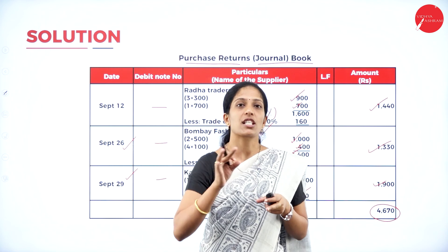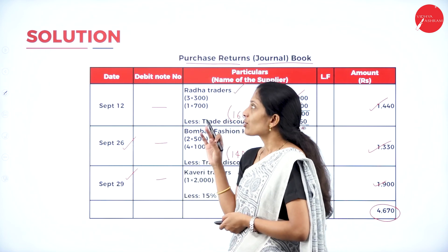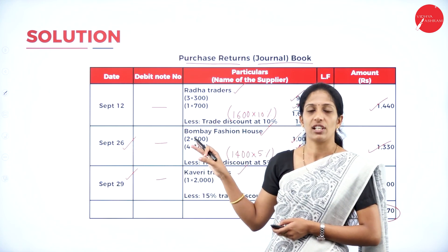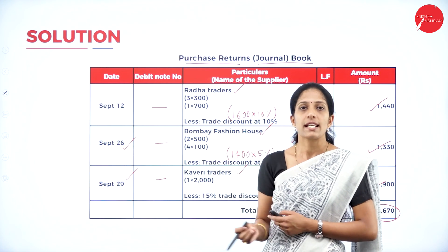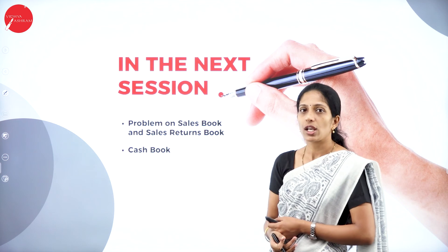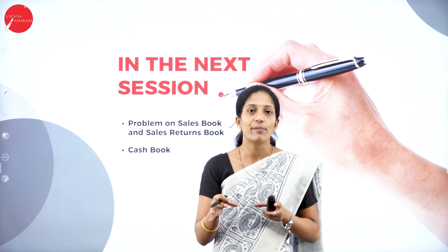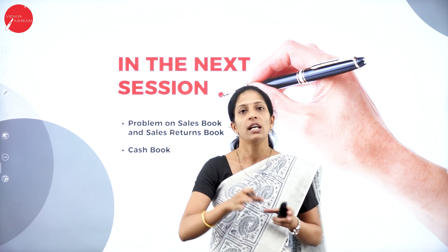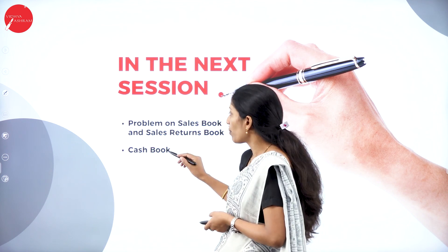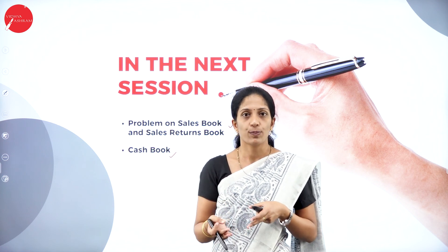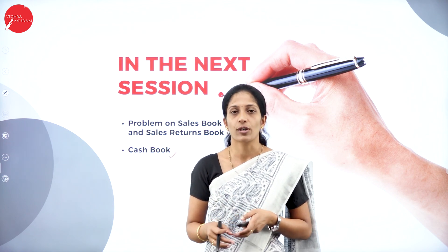So we have solved problems on all the subsidiary books, and also a problem specifically on purchase book and purchase returns book. This is how we record transactions in subsidiary books — knowing the format carefully is key, and all transactions can be easily calculated and recorded. In my next session, I will solve a problem on sales book and sales returns book together, followed by a problem on cash book, which is an important subsidiary book. Hope you understood today's session. See you in the next session with a new topic. Take care, thank you.